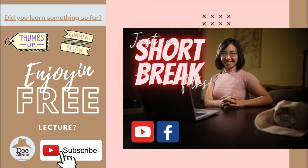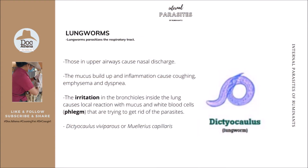Now let's talk about lungworms, which parasitize the respiratory tract. Those in the upper airways cause nasal discharge, and mucus buildup and inflammation cause coughing, emphysema, and dyspnea. The irritation caused by lungworms in the bronchioles triggers a local reaction with mucus and white blood cells — the phlegm — trying to rid the body of the parasites. The reported types of lungworms in ruminants include Dictyocaulus viviparus and Muellerius capillaris.